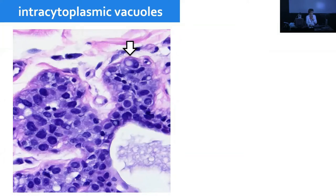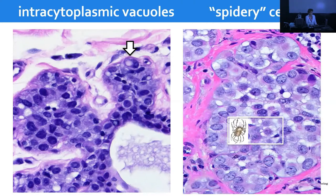When evaluating a lesion and thinking about classic lobular neoplasia, I specifically look for intracytoplasmic vacuoles — I almost require them for the diagnosis. I also look for what I call 'spidery cells.' The cells of classic lobular neoplasia have a central nucleus with very inconspicuous cytoplasm, and then spidery projections at the periphery reminiscent of spider legs. This morphology correlates with E-cadherin negativity, at least in my experience.